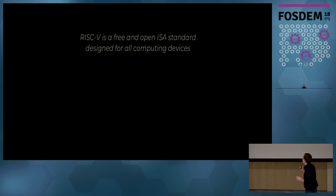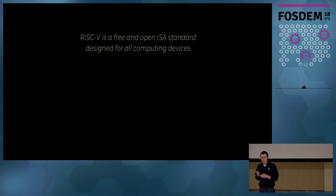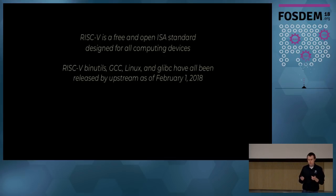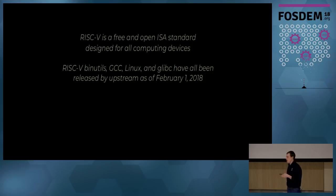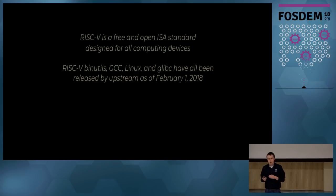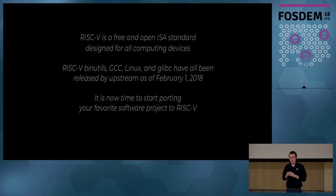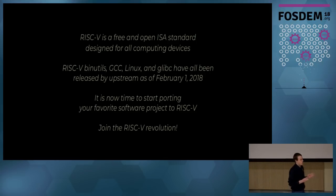So what is RISC-V? RISC-V is a free and open ISA standard designed for every computing device — from the smallest embedded IoT device to the largest supercomputer. RISC-V has been around for a while, but the major watershed moment in the last week is that the RISC-V port of GLibC has been submitted upstream and released, which means the core components of the Linux software stack are now available in tarball releases from upstream. It's now time to start porting your favorite software project to RISC-V — I'm here to convince you to join our revolution.